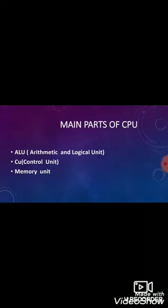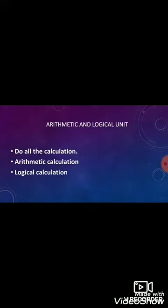CPU is made up of three main parts: ALU, CU, and memory unit. ALU means Arithmetic and Logical Unit. ALU can do all the calculations in a computer — it performs arithmetic calculations like addition, subtraction, multiplication, and division.